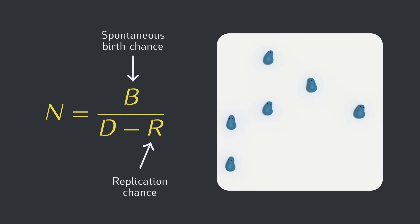In this video, we're going to make the model more realistic by completely getting rid of that spontaneous birth chance, which we know is unrealistic for complex organisms.